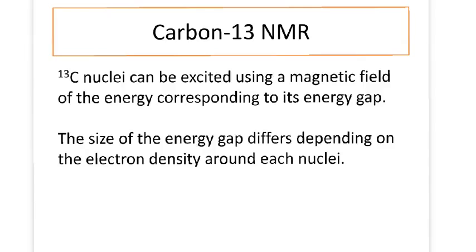We talked about this in greater detail in the introduction video, so I'm just going to skip over it briefly. For carbon-13 NMR, carbon-13 nuclei can be excited by using an external magnetic field, where the energy given corresponds to the energy gap between the aligned and non-aligned nuclei. The size of this energy gap differs depending on the electron density around each nuclei.